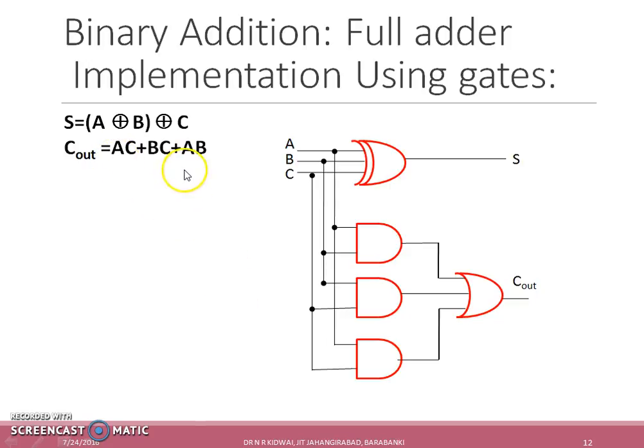Based on the expression, the full adder circuit can be realized by using an XOR gate of three inputs A, B and C and three AND gates and one OR gate.